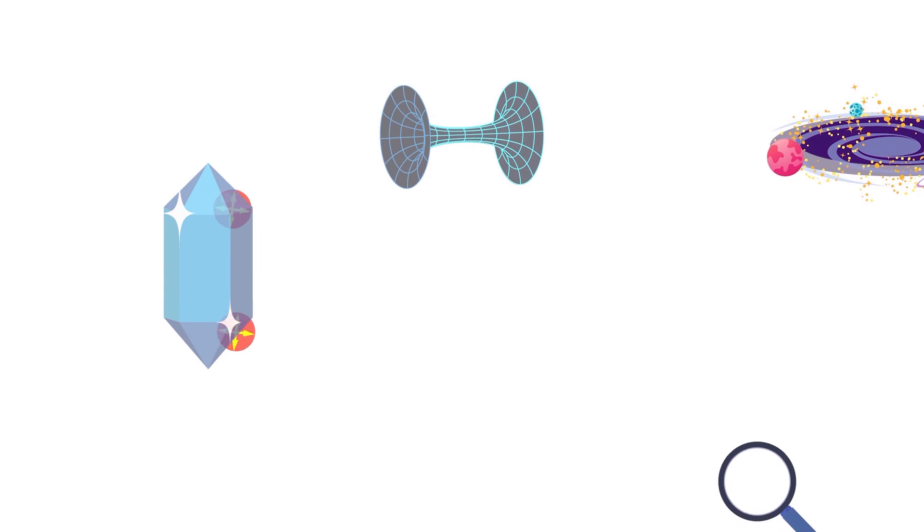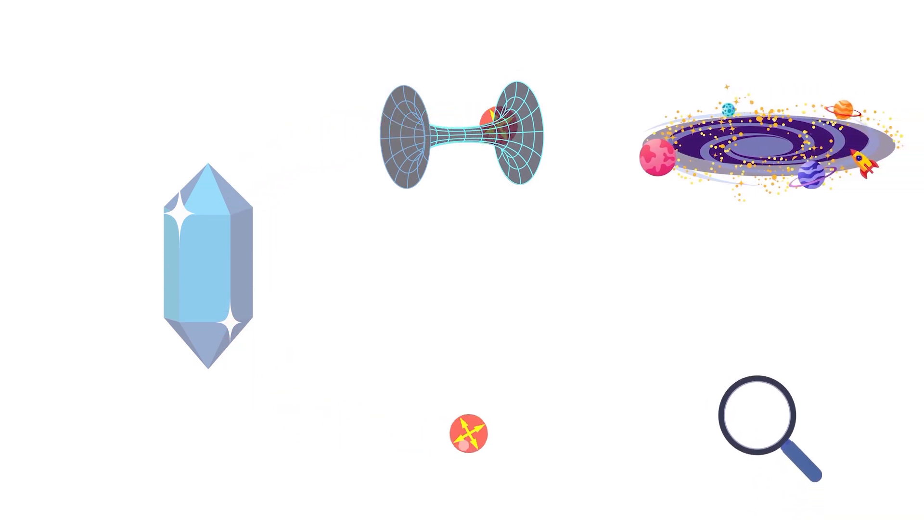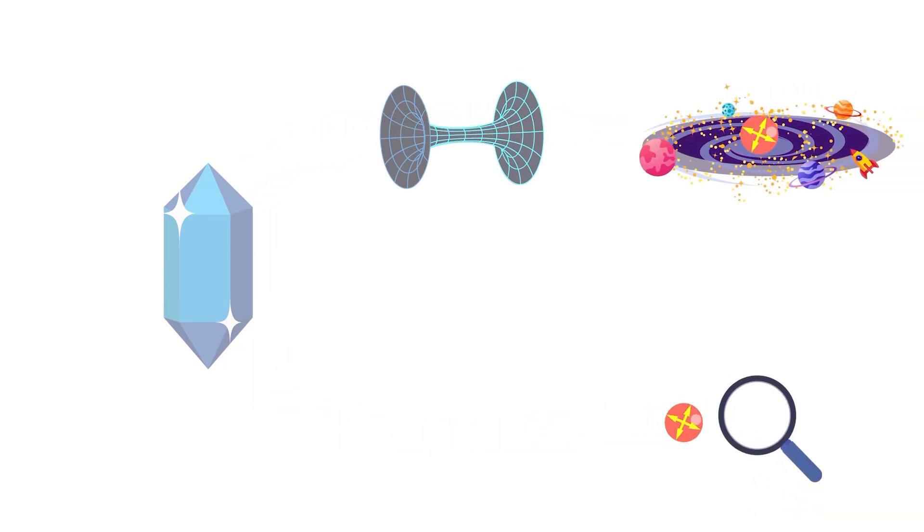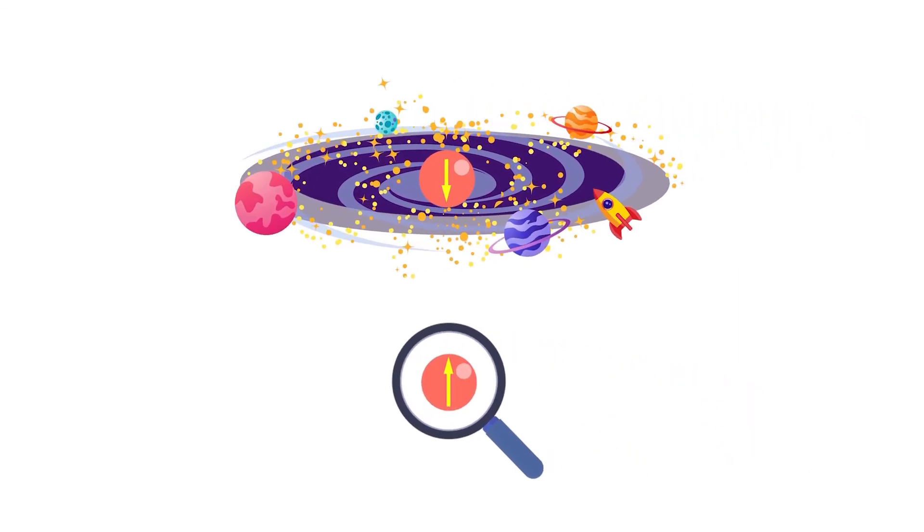Einstein called this spooky because, theoretically, you could take one of these entangled particles to the other side of the universe while keeping the other safely back at home on Earth. And if you measured your particle here on Earth, you'd instantly change the one on the other side of the universe, which seemed to suggest faster-than-light communication, a big no-no in Einsteinian physics.